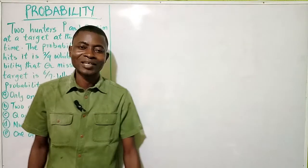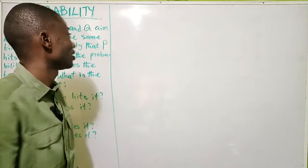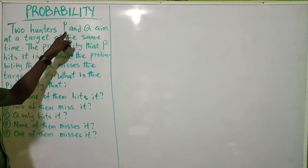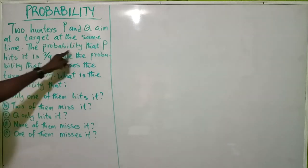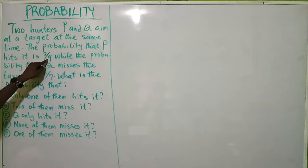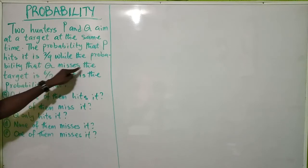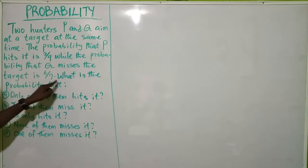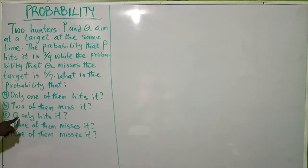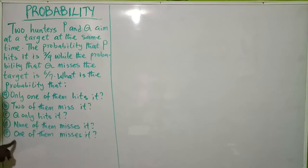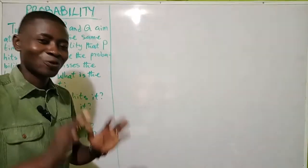Hello guys, you're warmly welcome to my channel. Once again, still on probability, we have a question here that says two hunters P and Q aim at a target at the same time. The probability that P hits it is 2 over 9, while the probability that Q misses the target is 6 over 7. What is the probability that: A) only one of them hits it, B) two of them miss it, C) Q only hits it, D) none of them misses it, E) one of them misses it.